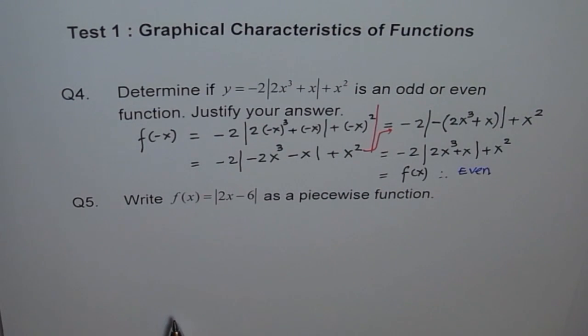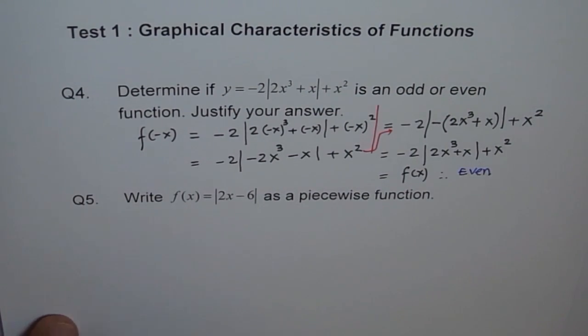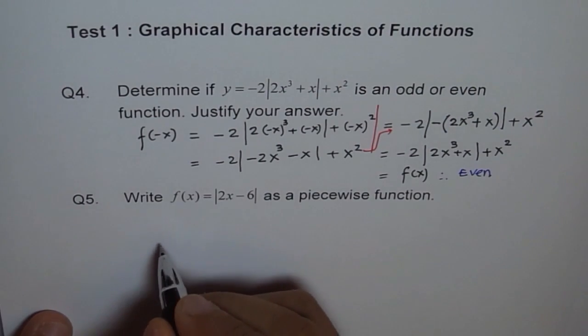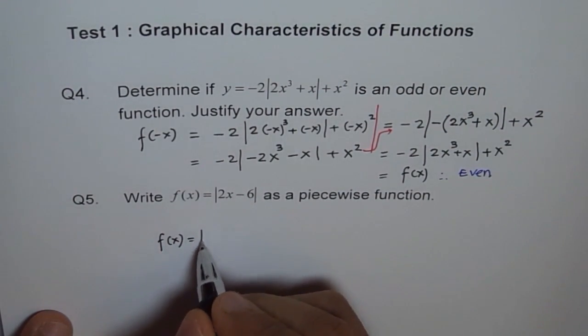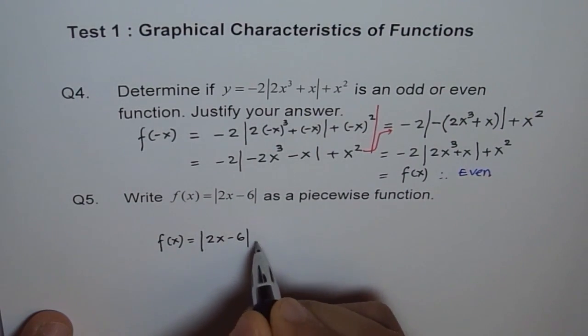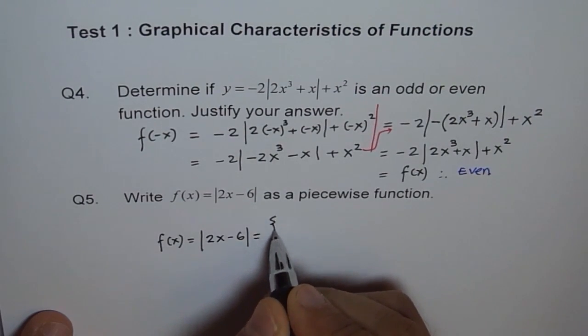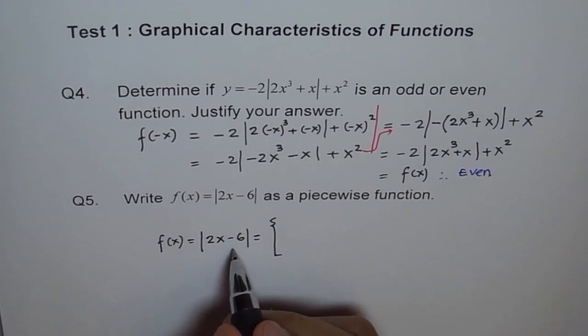Question number 5. Absolute function as a piecewise function. You know, absolute function is a piecewise function, correct? So by definition, if we have absolute function f(x), which in this case is 2x minus 6,